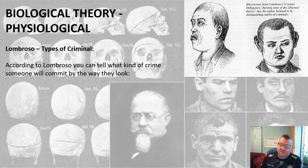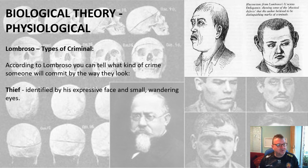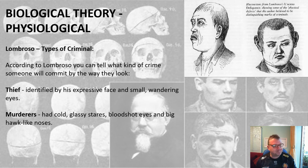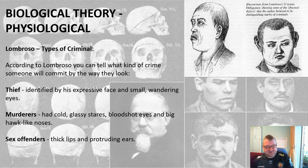According to Lombroso, you could tell what kind of crime someone would commit by the way they look — a useful couple of examples for exam questions. He believed a thief could be identified by their expressive face and small wandering eyes, that murderers had cold glassy stares, bloodshot eyes, and big hawk-like noses, and that sex offenders had thick lips and protruding ears.